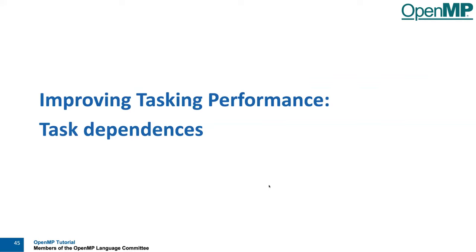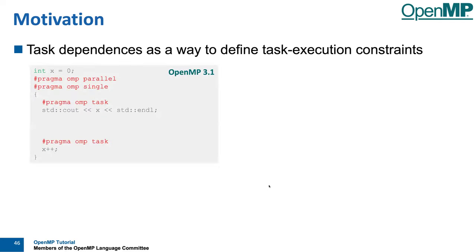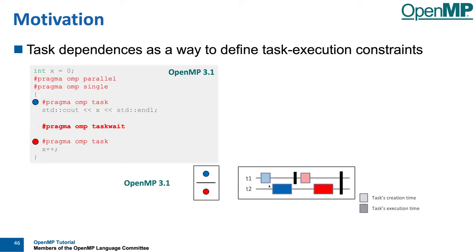Now, task dependencies. All OpenMP tasks execute in an arbitrarily non-deterministic order. The question is how can we get some order into this execution? Here I show an example where one task outputs x on the console and another task modifies that variable. If you want to make sure the right value is printed, you have to ensure the blue task executes before the red task.